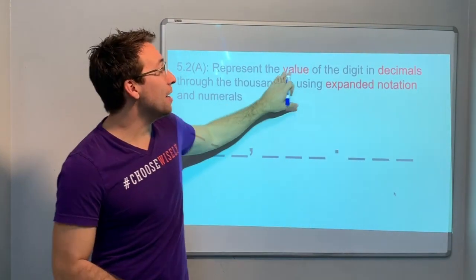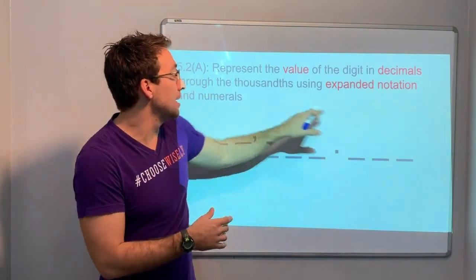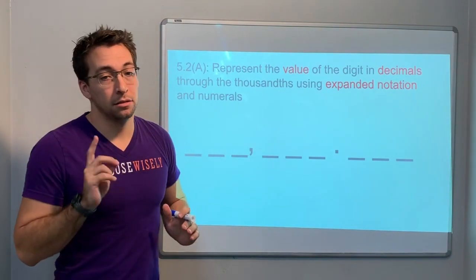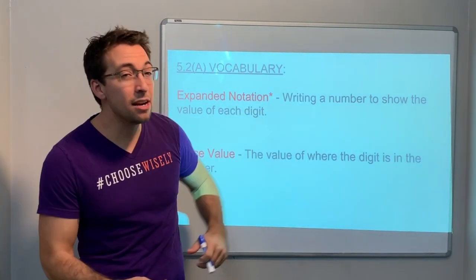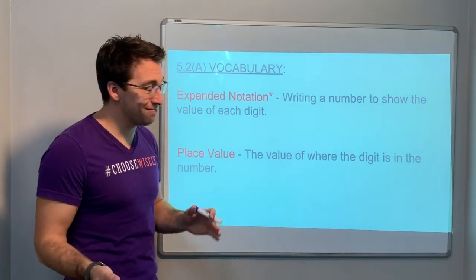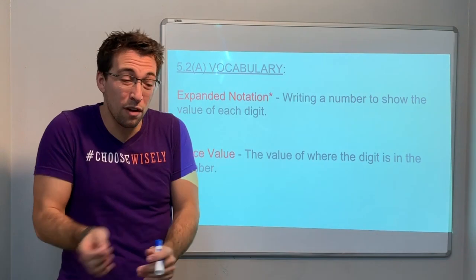We have to know the value of decimals and we have to be able to represent that through expanded notation. So what does that mean? What do you need to know? You need to know expanded notation is writing a number to show the value of each digit. And then place value, that's the value of each digit.